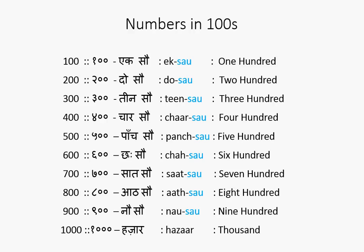Now let us take a look at the thousand series. Simply, you will have to replace Sao with Hazaar. So: Ek Hazaar, Do Hazaar, Teen Hazaar, Chaar Hazaar, Paanch Hazaar, Chai Hazaar, Saat Hazaar, Aat Hazaar, Nao Hazaar, and then Das Hazaar — ten thousand.